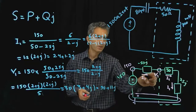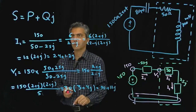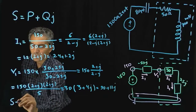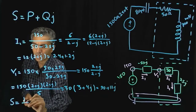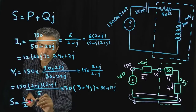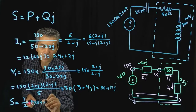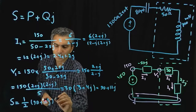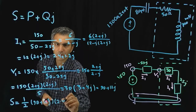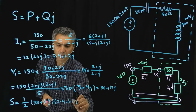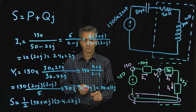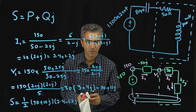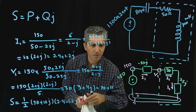So we have the voltage 90 plus 120j and we calculated the current. Now we can calculate S, which is one-half the voltage times the conjugate of the current. That's one-half of (90 plus 120j) times the conjugate of the current, which is 2.4 minus 1.2j.